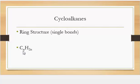Cycloalkanes have a characteristic chemical formula of C subscript n, H subscript 2n, where n is the number of carbon atoms.